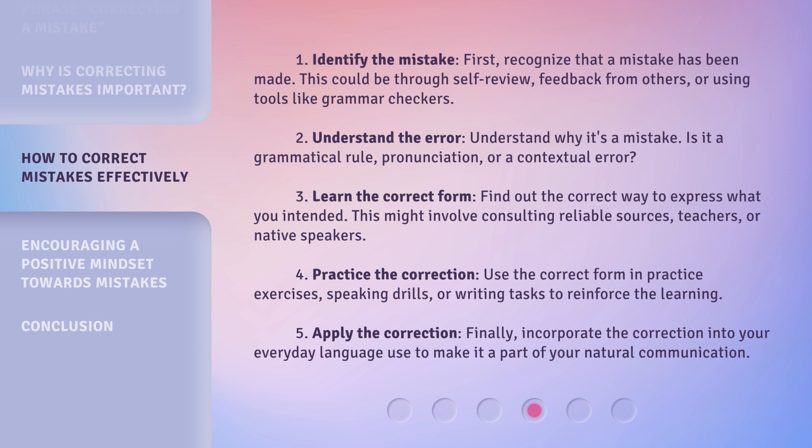Step 2: Understand the error. Understand why it's a mistake — is it a grammatical rule, pronunciation, or a contextual error? Step 3: Learn the correct form. Find out the correct way to express what you intended. This might involve consulting reliable sources, teachers, or native speakers.